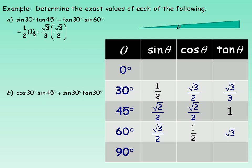1 half times 1 is of course a half. Root 3 times root 3 is 3, and in the denominator 3 times 2 is 6. Now 3 sixths reduces to a half, and so a half and a half would add to 1. So the exact value of all this is actually exactly 1.